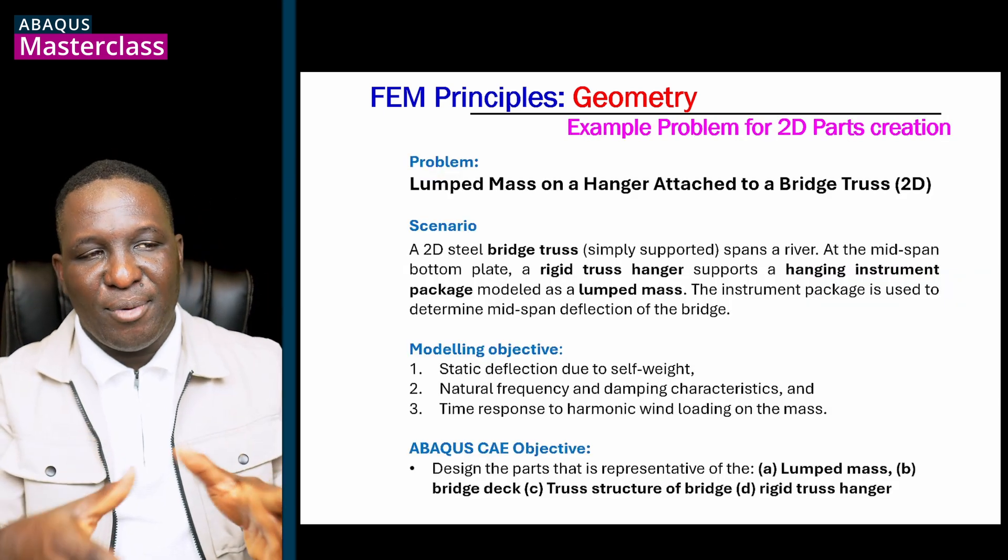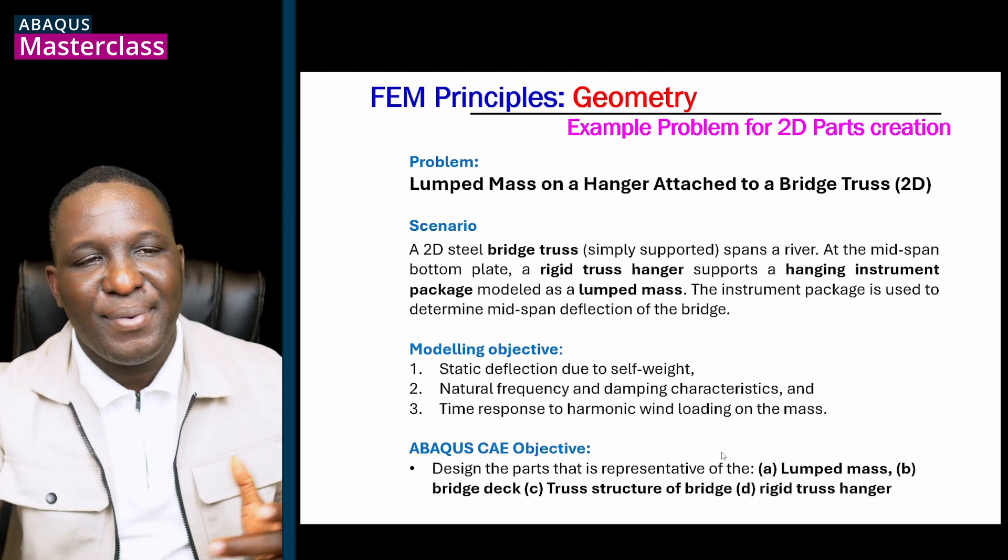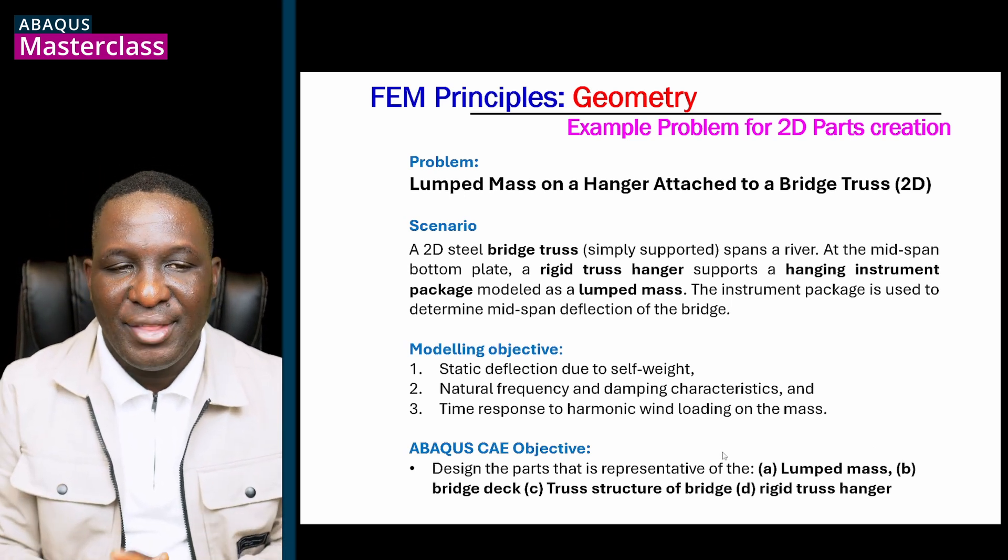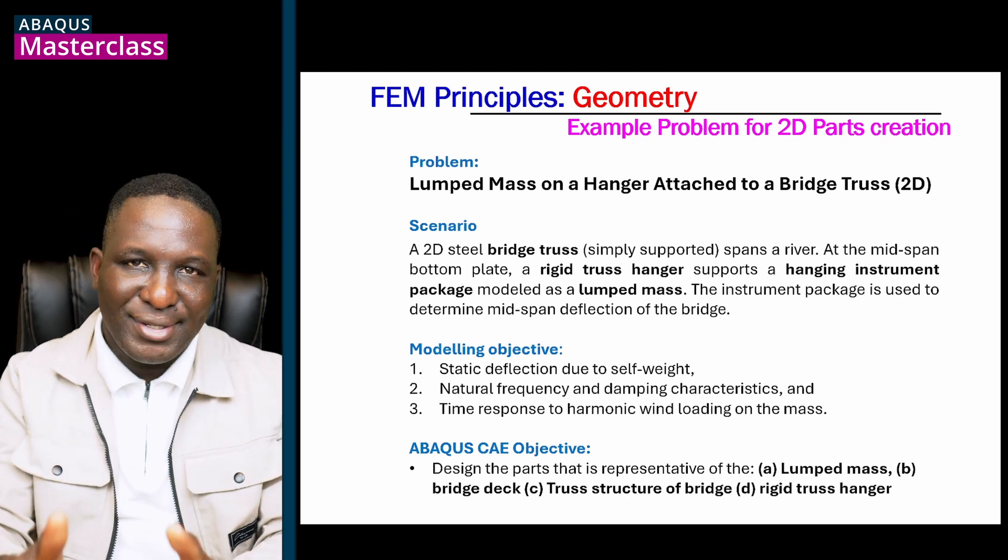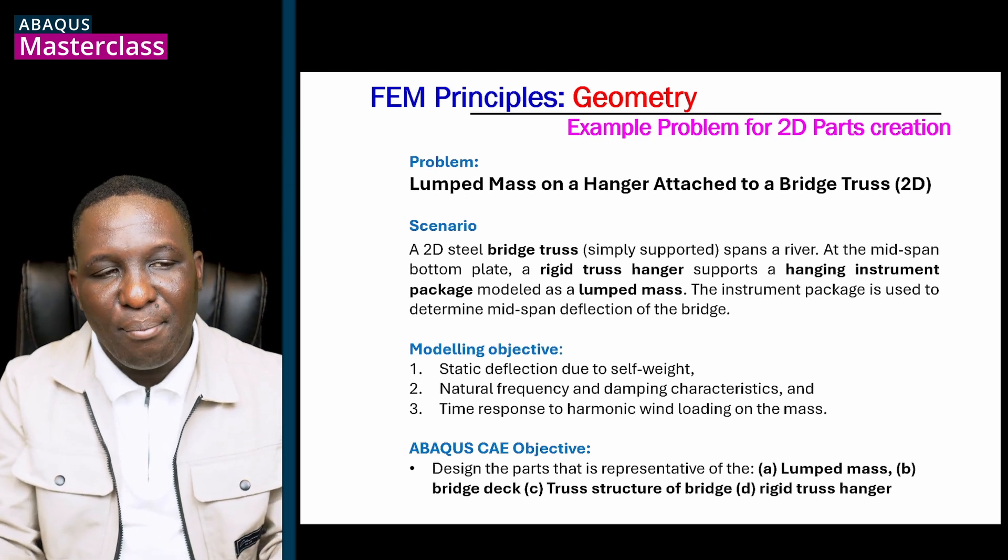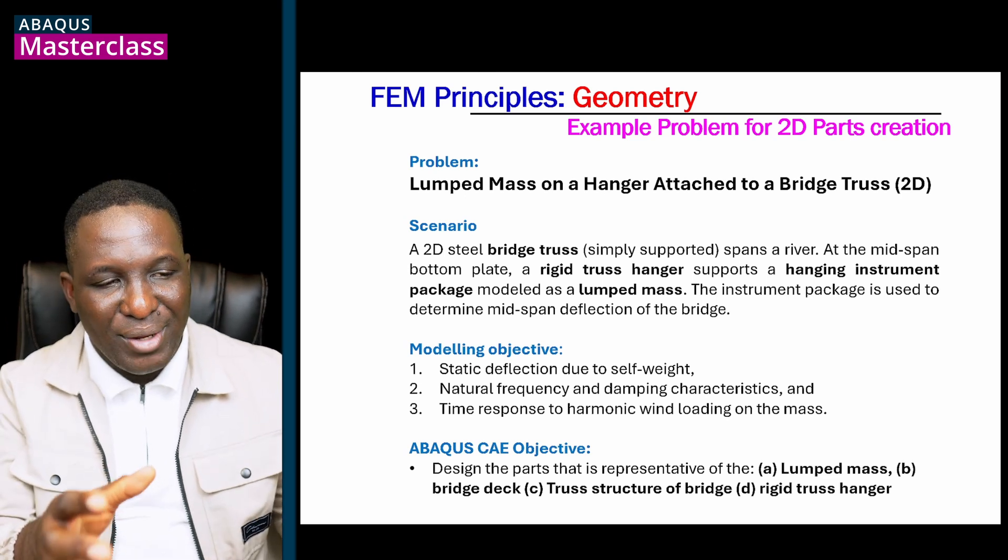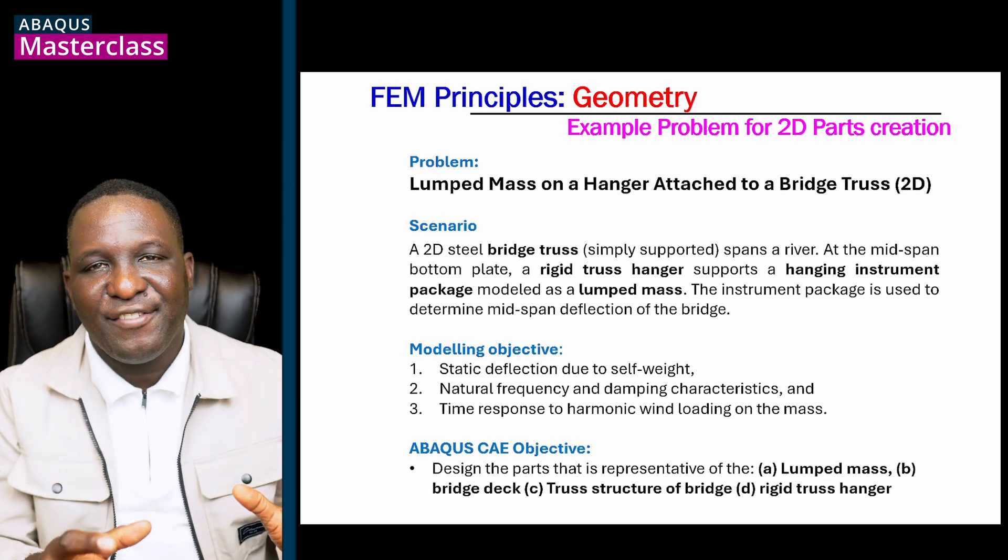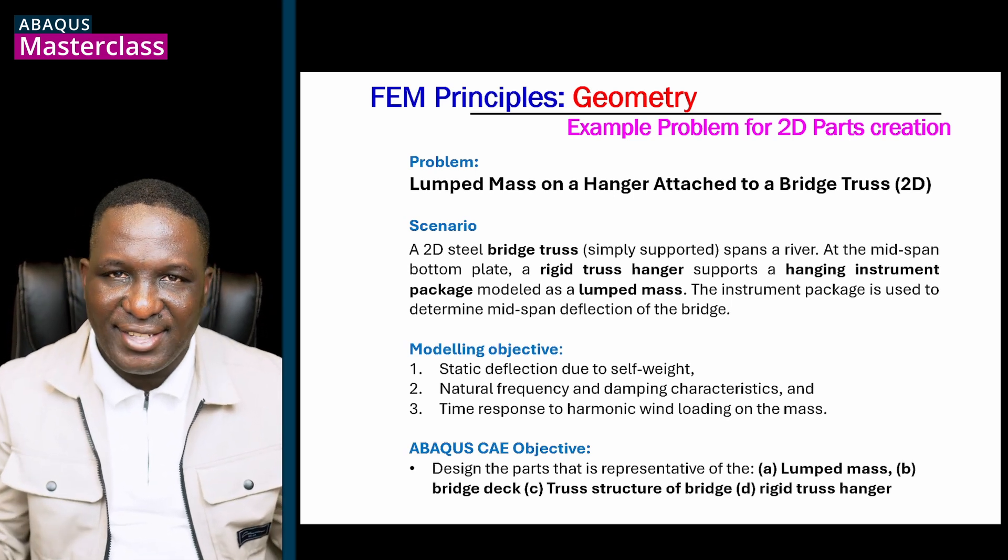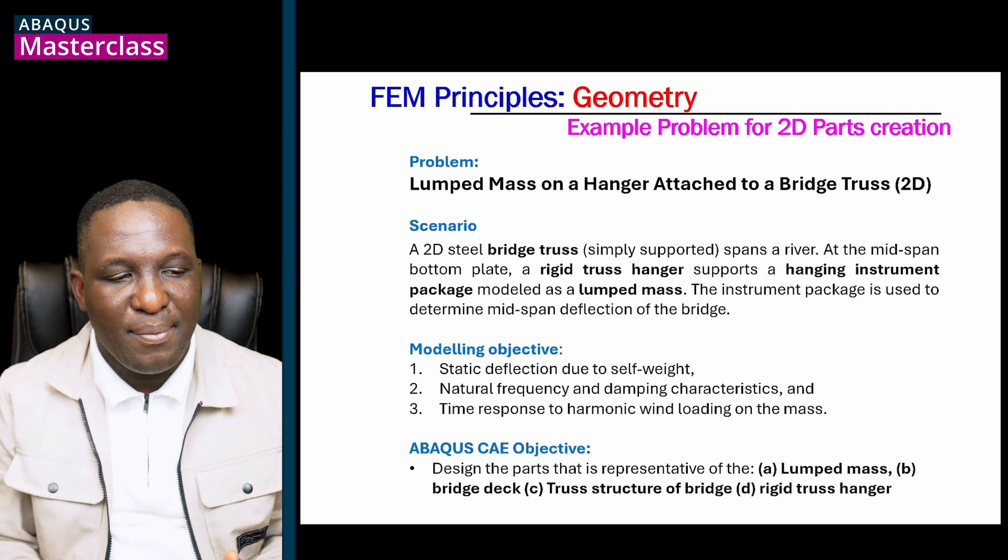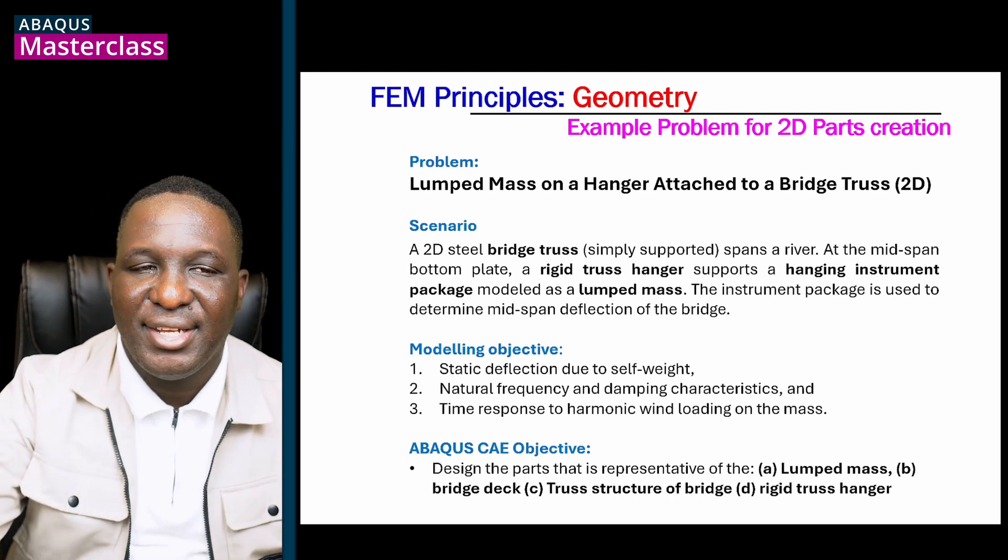So the problem we're going to solve is basically a problem of a lumped mass on a hanger attached to a bridge truss with a clear bridge deck. So the scenario, basically, we've got a 2D bridge truss that is simply supporting an expansion river. At the mid-span of the bottom plate, we've got a rigid truss hanger that supports a hanging instrument package modeled as a lumped mass. This instrument package is used to determine the mid-span deflection of the beam. We're not going to be dealing with the modeling objective, that will come much later on. But for this specific video, ABAQUS CAE's objective here is to design the parts that are representative of the system. And that includes four components, the lumped mass, the bridge deck, the truss structure of the bridge, and the rigid truss hanger.